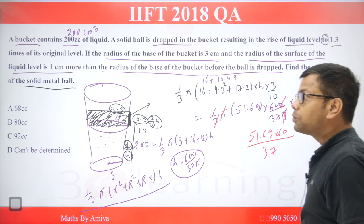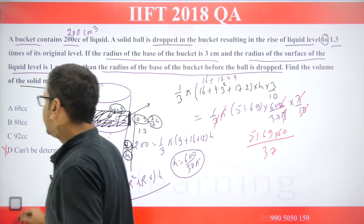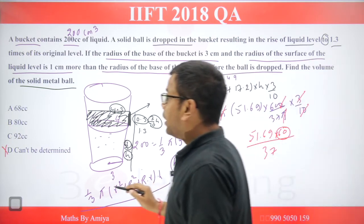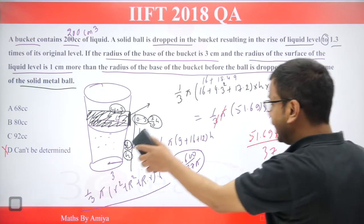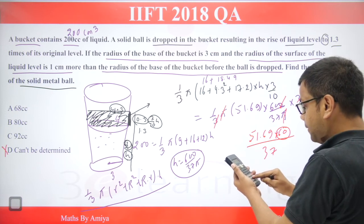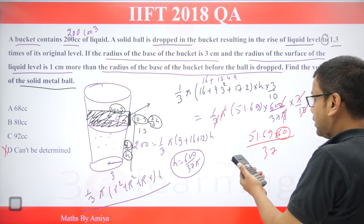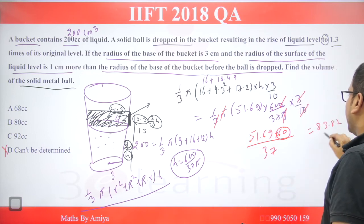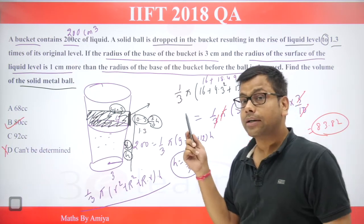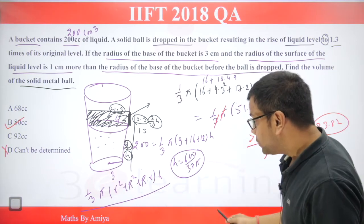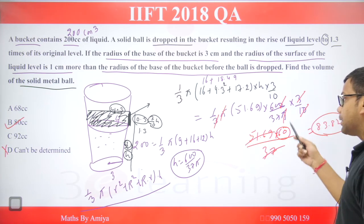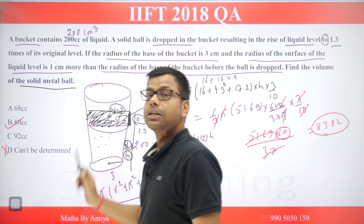In the approximation, you can use 51 to solve — the options are far apart so approximation is fine. It will be more than 60, more than 81 to 82. Using a calculator: 51.69 × 60 / 37 = 83.82. If you need the nearest answer from the options, the answer is 80. It is not exact but it is the nearest and best answer. So the volume of the solid metal ball is approximately 80 cubic centimeters.